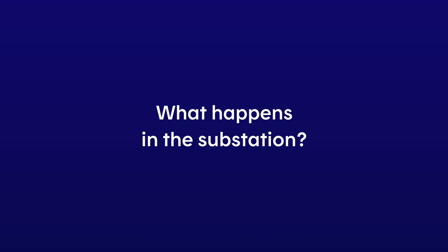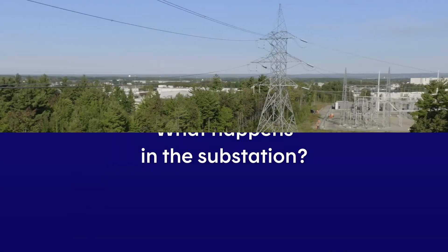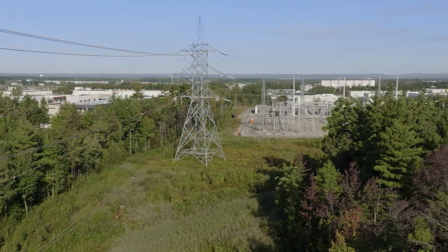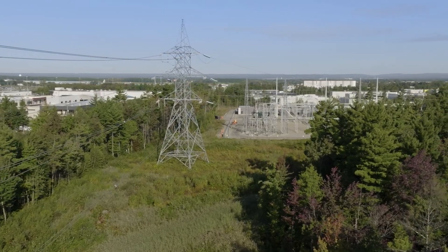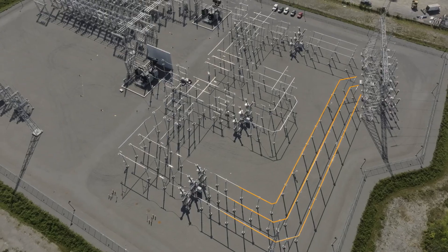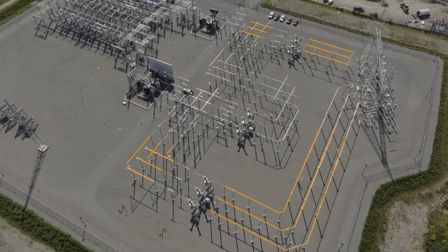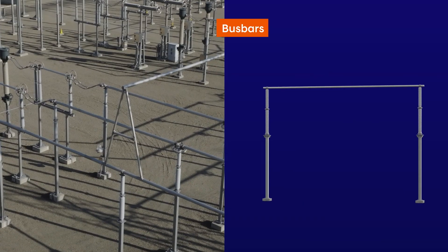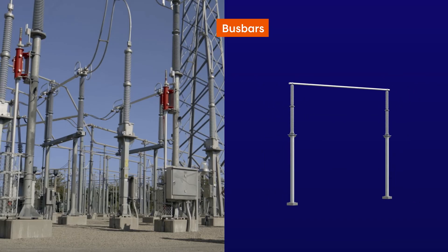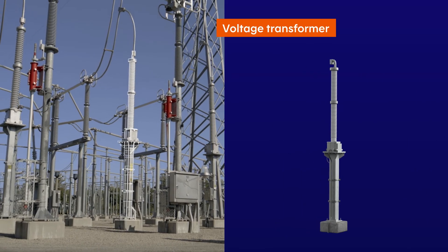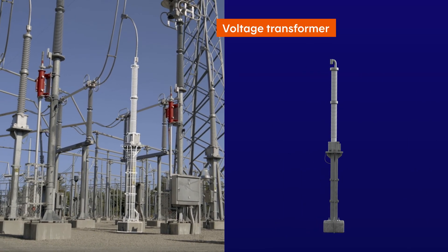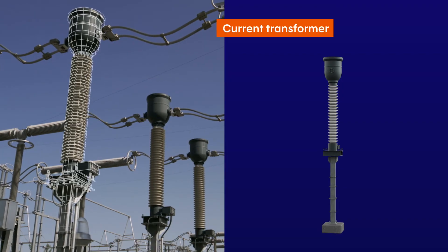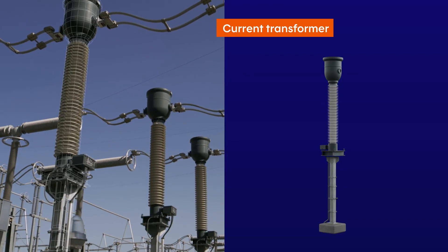But what happens in a substation? Electricity enters through flexible conductors, which are cables supported by towers. In the substation, it passes through bus bars, which are usually large, rigid conductors. A voltage transformer measures the voltage, and a current transformer measures the intensity of the current in amperes.